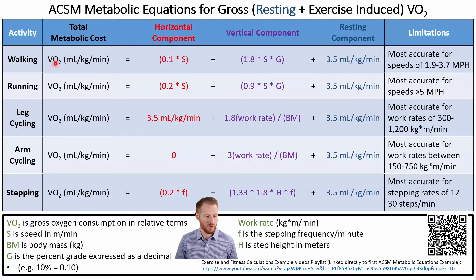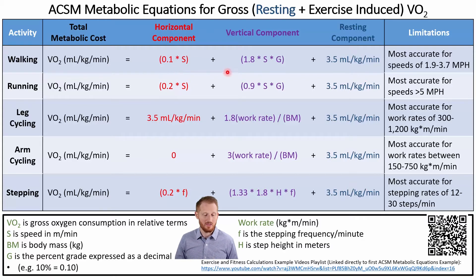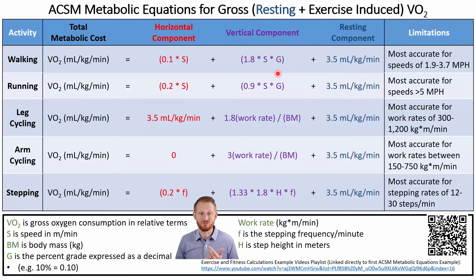Let's go over the walking equation. VO2 equals the horizontal component of 0.1 times S (where S stands for speed), plus 1.8 times S times G (where G is the grade of the treadmill), plus the resting component.